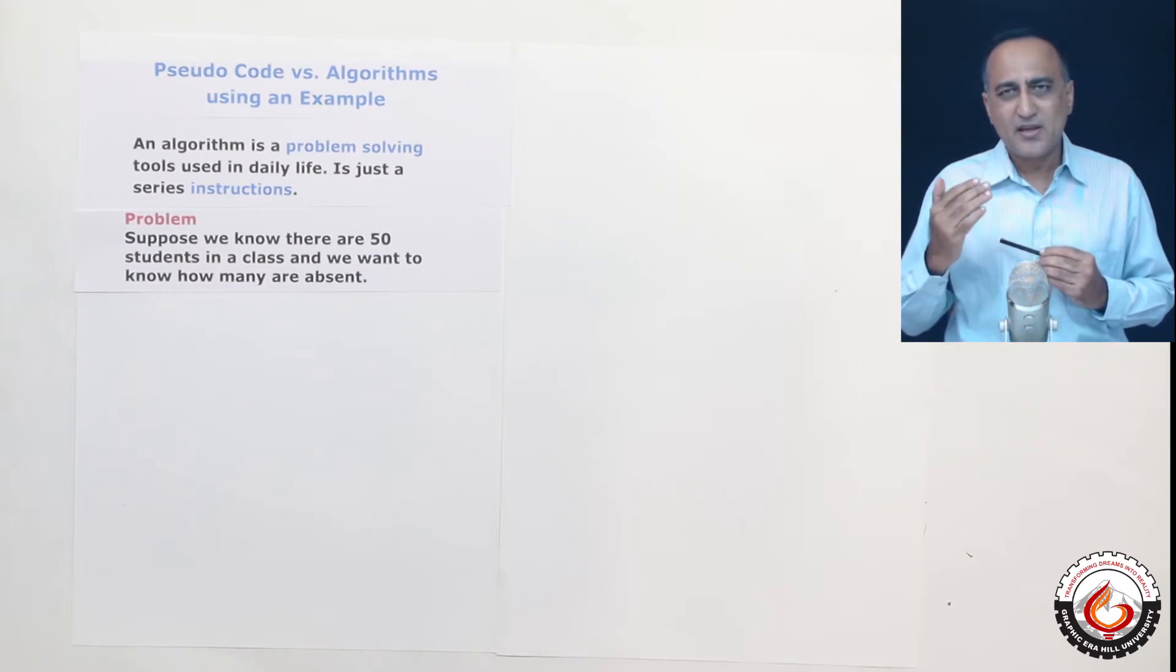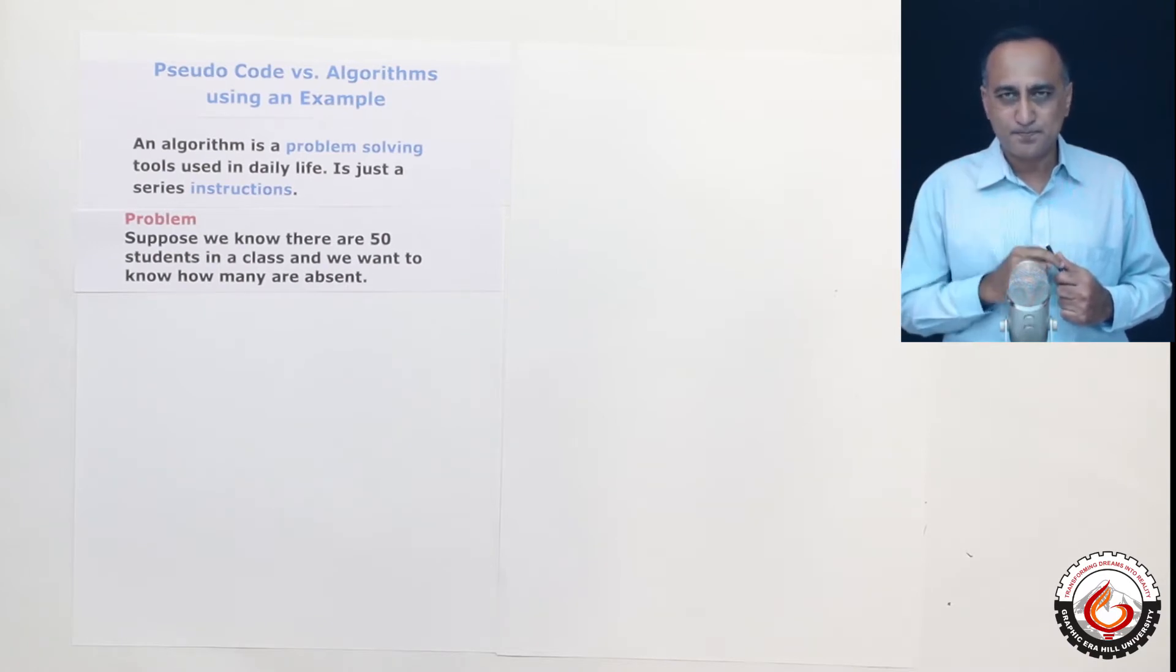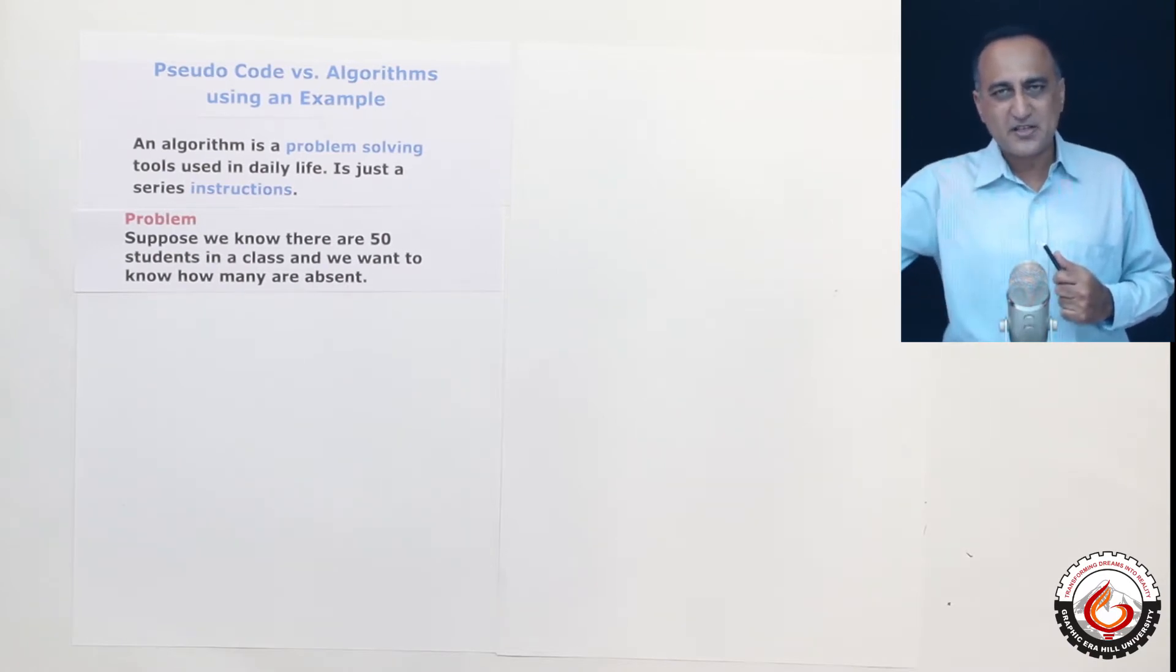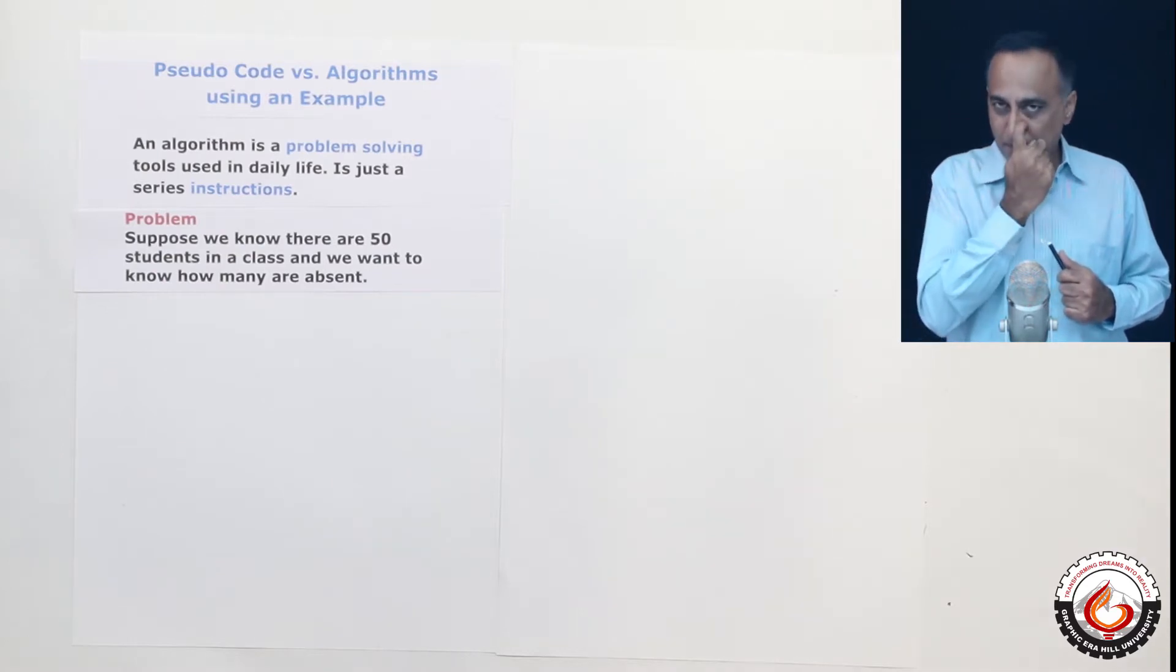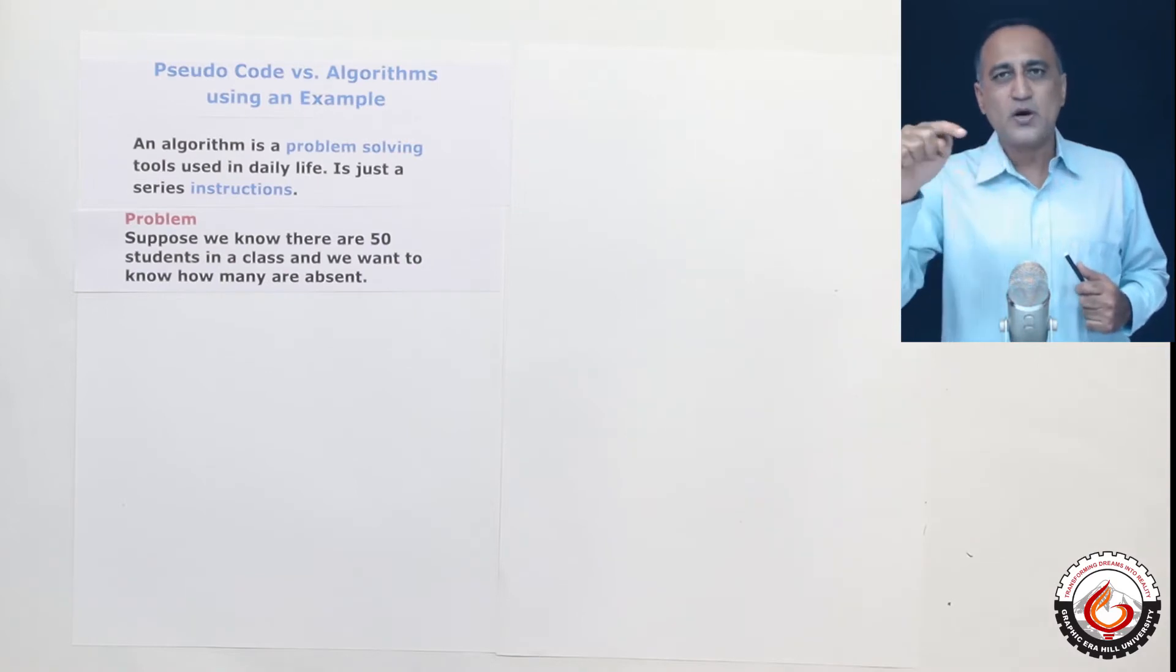So one way to solve this problem is I can go into the class. First, I'll say total number of students is 50. Initialize absent to zero, initialize present also to zero. Then what I can do is for every student I see, increase the present count to present count plus one.